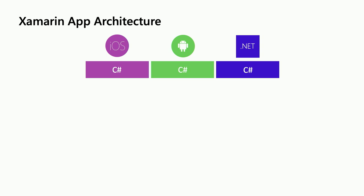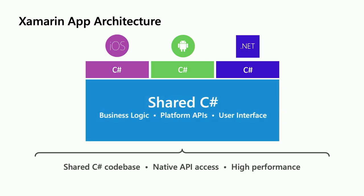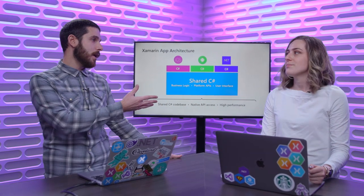Let's take a look under the hood at how it actually works. The Xamarin app architecture is actually just the .NET architecture itself. You have a head project for all of the platforms you want to target — iOS, Android, and .NET, which could be UWP or desktop apps. But then there's also your shared layer, where you put your business logic, and you can also share platform APIs and user interface. Because Xamarin is using the native stuff under the hood, you get all that high performance with C# that you'd expect. You can scale this up and down — share a lot or share a little depending on your needs.